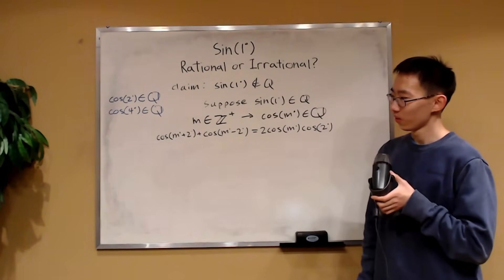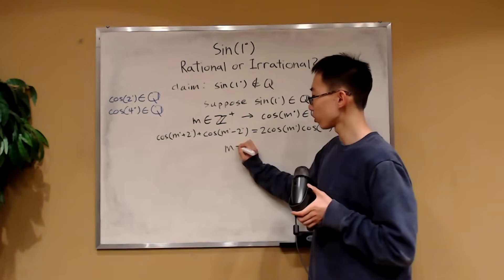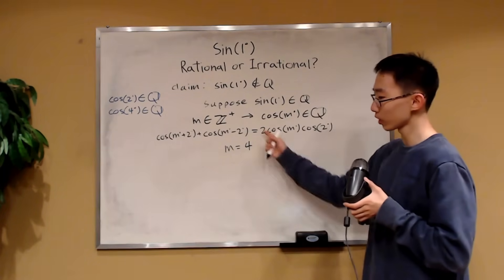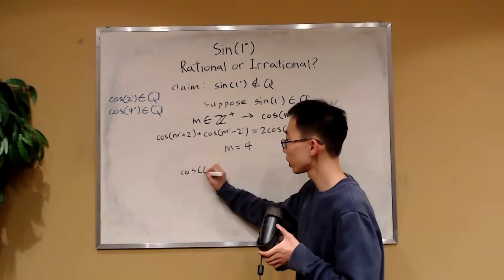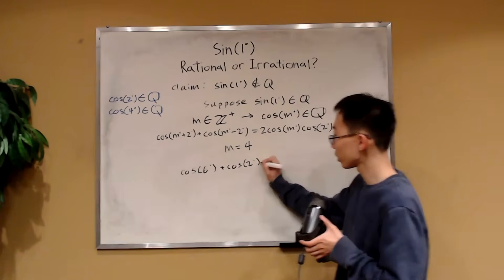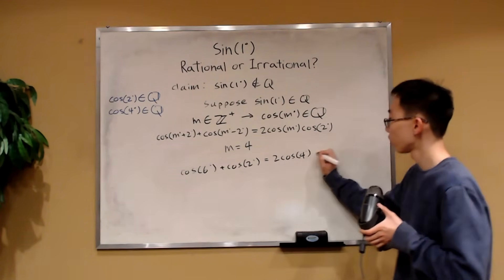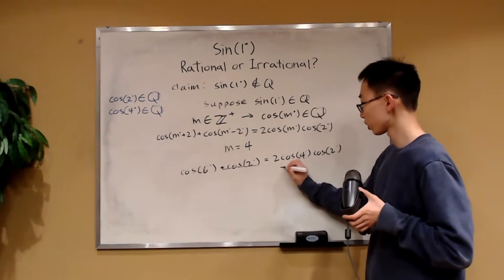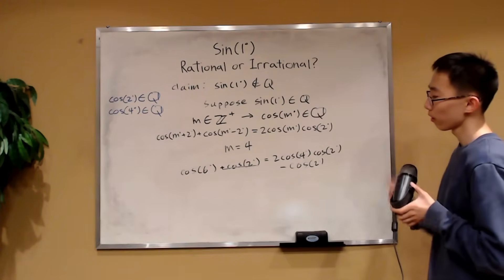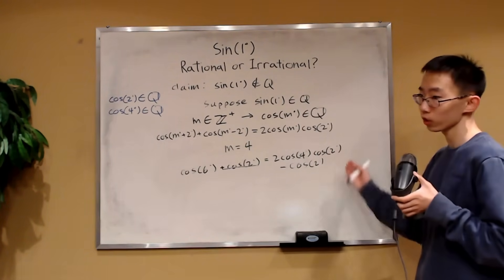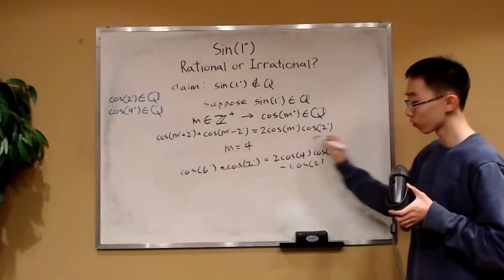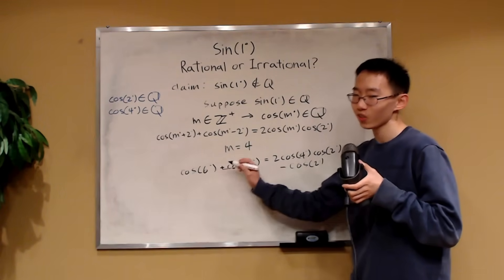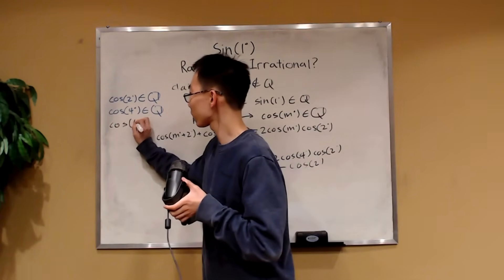Why is this so powerful? If we take m equals 4 — and we can do this because cosine of 4 degrees is rational — then by this identity we get cosine of 6 degrees plus cosine of 2 degrees equals 2 cosine of 4 degrees times cosine of 2 degrees. Taking cosine of 2 degrees to the other side, because cosine of 4 degrees and cosine of 2 degrees are both rational, this entire expression is rational. Therefore cosine of 6 degrees is also rational.